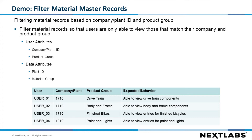We have four users for this example. User 1 works for the company and plant of 1710 and is part of the drivetrain group. User 2 has the same company and plant ID but is part of the body and frame group. User 3 is also part of the same company but is part of the finished bikes group. And User 4 is part of the other company, 1010, and is part of the paint and lights group.